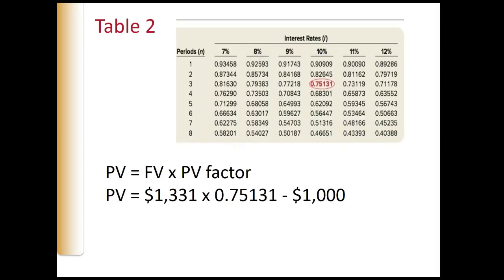We can use Table 2, located in the back of your book — the present value of $1. From the table, you find the present value factor for three periods where n=3 at 10%, which is 0.75131. This means a dollar received in three years, where interest is 10% compounded annually, is worth 75 cents today. So the present value of $1,331 in three years is $1,000 today.